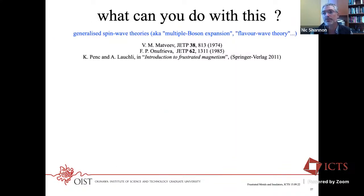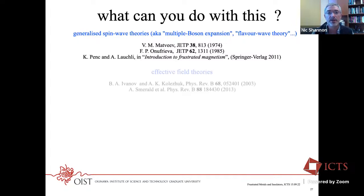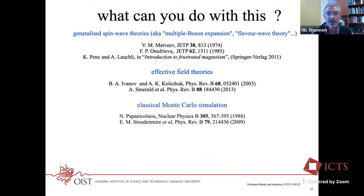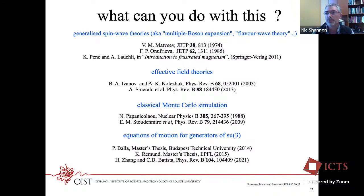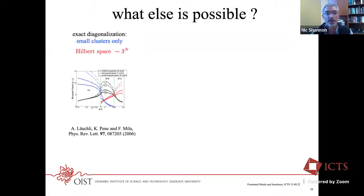What can you do with this? From this point you can derive the generalized spin wave theories of Matveyev, derive effective field theories, do classical Monte Carlo simulation, and write down equations of motion for generators of SU(3). To the best of my knowledge, the equations of motion were first written by one of Carlo's master's students and more or less simultaneously by Kim, and recently revisited by Jang and Batista in a slightly more general coherent-state framework.